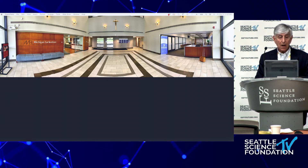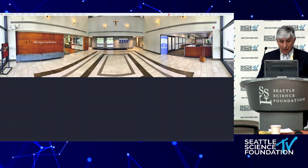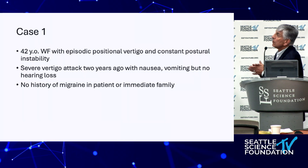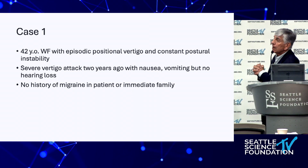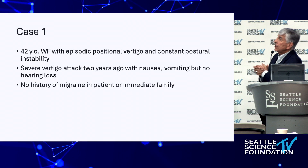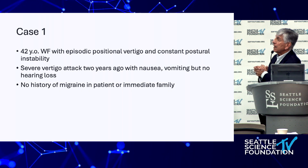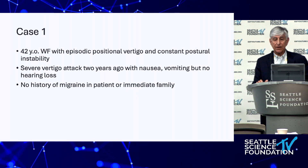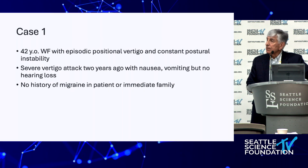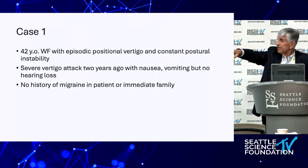Case 1: A 42-year-old female with episodic positional vertigo and constant postural instability. She had a severe attack of vertigo with nausea and vomiting but no hearing loss a couple of years ago. No history of migraine. The panel was asked: what are you thinking about with this history? The first question should be to get play-by-play details — what were you doing, how long did it last?